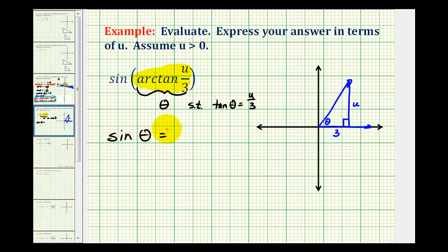So now going back over to our triangle, sine theta would be the ratio of the length of the opposite side to the hypotenuse. So now we can find the length of the hypotenuse by using the Pythagorean Theorem.